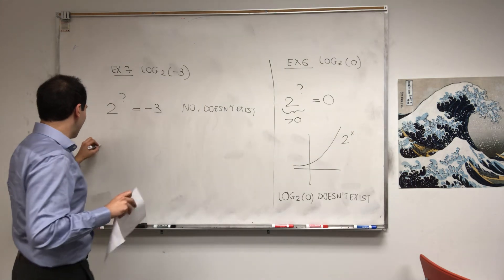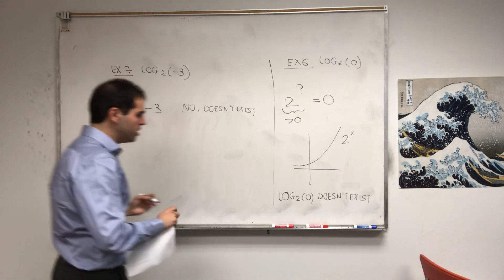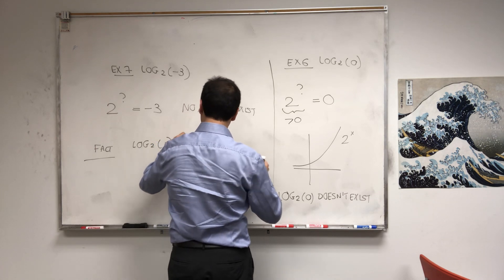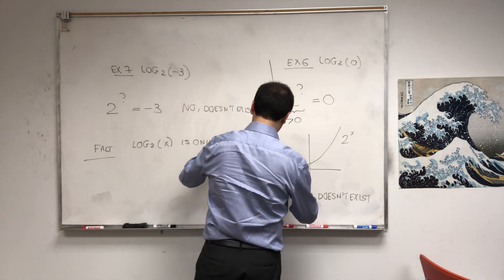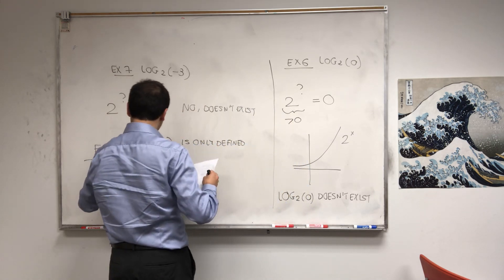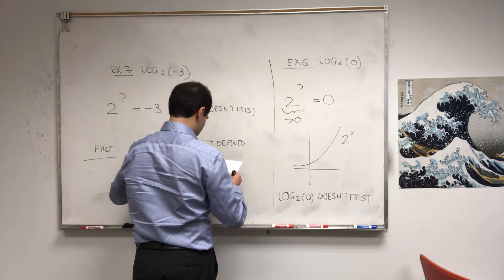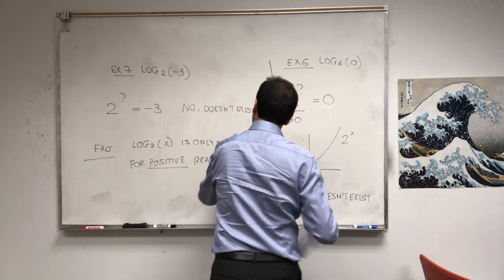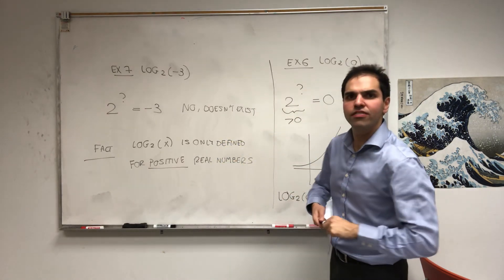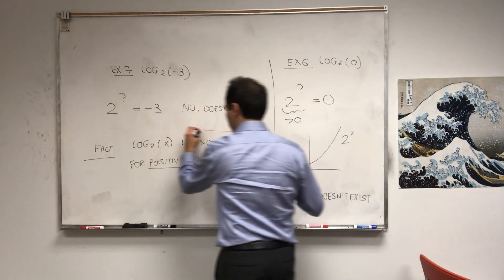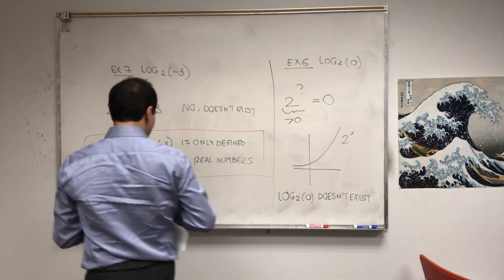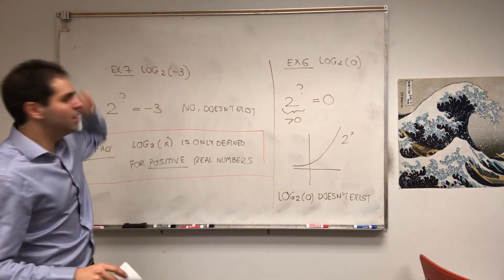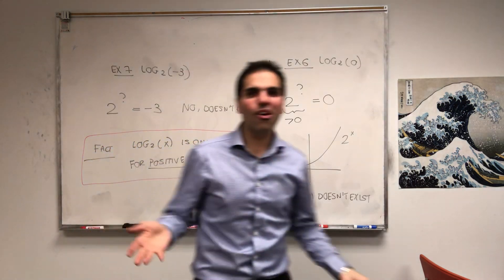In other words, notice for zero and actually any negative number, the log doesn't exist. And, in fact, there's a very important fact to remember: the log is only defined for positive numbers. Log base 2 of x is only defined for positive real numbers. In other words, the domain is all positive real numbers. But, again, I really want to emphasize that the log can be also defined for non-integer values, like log base 2 of one-fourth or log base 2 of square root of two.